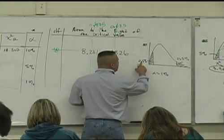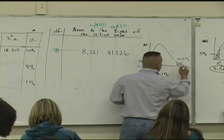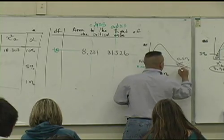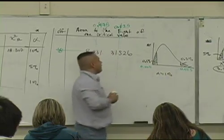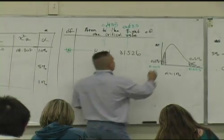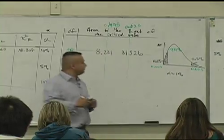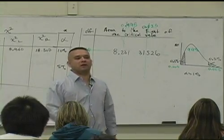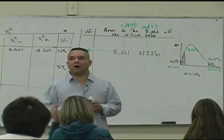So as a percent, move this two spaces to the left, 0.005. That's in the tail. What's in the middle there if alpha is 1%? 99%. Is that right? 1% in the tails, 99% in the middle. Why is that? The sum has to be 100.